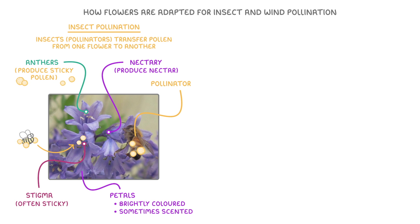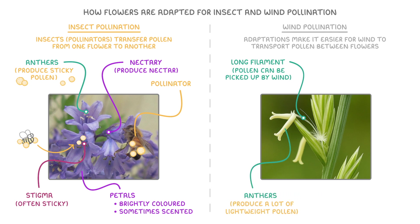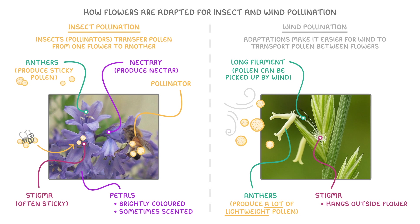Now let's compare these to plants that use wind pollination instead. These have adaptations that make it easier for wind to transport pollen between flowers. The first adaptation is that wind-pollinated flowers usually have long filaments, so that the anthers hang outside the flower and pollen can be picked up by wind currents. The second key adaptation is that anthers produce a lot of lightweight pollen — a lot because not much of it is likely to land on a stigma of the same species, and lightweight so it can easily be carried by the wind. Another adaptation is that the stigma often hangs outside the flower and is usually feathery too, helping it act like a net to catch pollen passing in the wind.